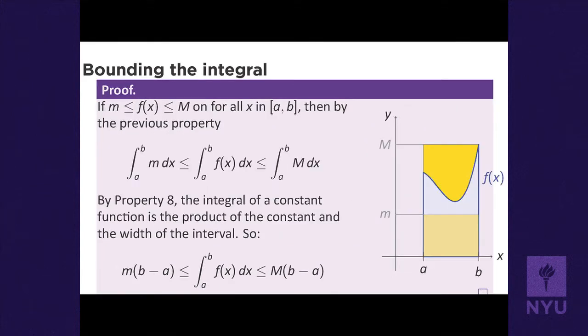For the third property: if the function is between constants m and M, the area under the curve must be greater than the area of the smaller rectangle (m × (b - a)) and less than the area of the larger rectangle (M × (b - a)). This follows from the fact that limits of non-negative sums are non-negative.